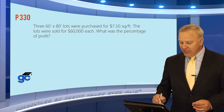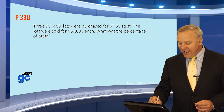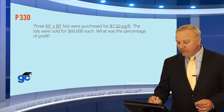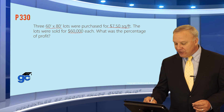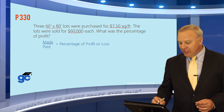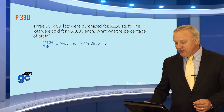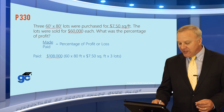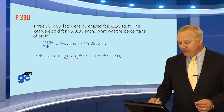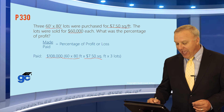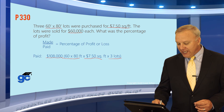Let's do one more. This question says that three 60 by 80 foot lots were purchased for $7.50 per square foot. The lots were later sold for $60,000 each. What was the percentage of profit? Same as the last question, made over paid gives us our percentage of profit or loss. In this case, they paid $108,000 — 60 by 80 is the measurement times $7.50 per square foot times three lots totals $108,000.